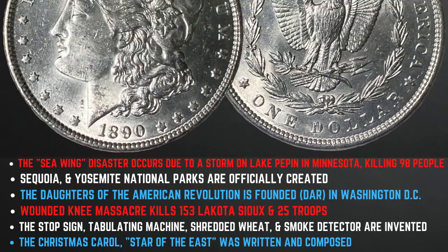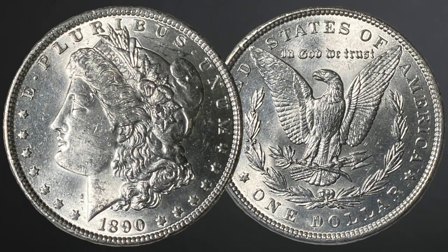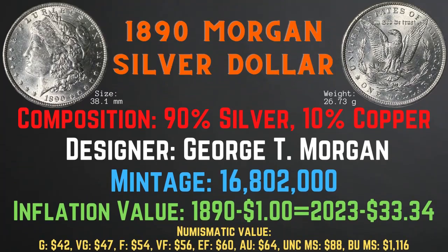Now let's take a look at the 1890 Morgan silver dollar. The 1890 Morgan silver dollar was minted in Philadelphia, with a size of 38.1 millimeters and a weight of 26.73 grams. It has a composition of 90% silver and 10% copper. Its designer was George T. Morgan. Its mintage is 16,802,000. Its inflationary value for the year 1890 is $33.34. The numismatic values range from $42 in good condition to $1,116 in brilliant uncirculated mint state condition.